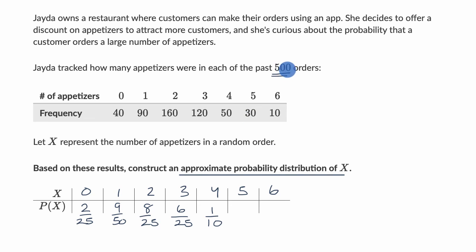30 out of 500 is the same thing as three out of 50. So I'll just write it like that. And then last but not least, 10 out of 500 is the same thing as one in 50. And we're done. We have just constructed an approximate probability distribution for our random variable X.